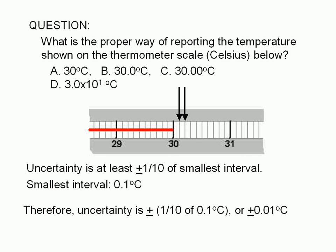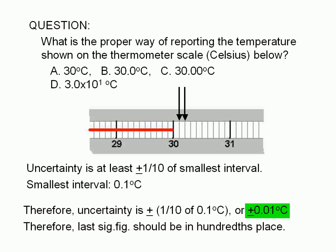Therefore, the uncertainty of any reading made from this scale is at least one-tenth of 0.1 degrees. One-tenth of 0.1 is one-one-hundredth. Therefore, the last significant digit of any reading from this scale should be the digit in the hundredths place, and the correct answer is choice C: 30.00 degrees Celsius.